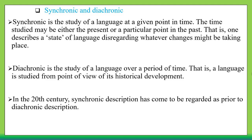Another dichotomy is synchronic and diachronic. Synchronic is the study of a language at a given point in time — the time studied may be the present or a particular point in the past — describing a state of language and disregarding whatever changes might be taking place. So you study language at one particular point in time, for example 200 years ago.